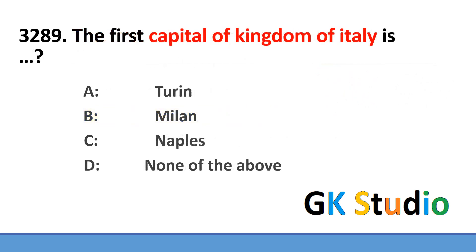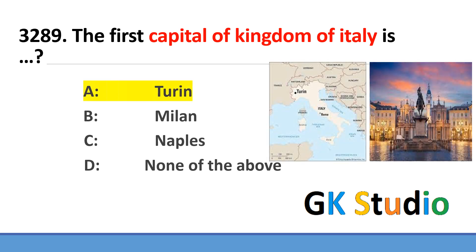The first capital of the Kingdom of Italy is Turin. Nowadays the capital of Italy is Rome.